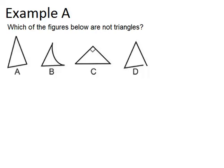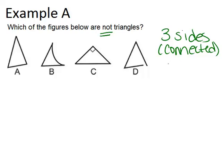In this first example, it says which of the figures below are not triangles. So to be a triangle, it has to have three sides, and the three sides should be connected with no gaps, and all sides should be straight lines.